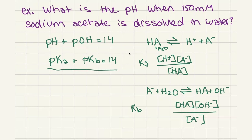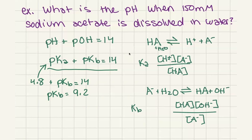Now we can solve for pKb. We know that the pKa of the conjugate acid is 4.8, so: 4.8 plus pKb equals 14, which gives us pKb equals 9.2. Now we can set up the same ICE-table-style reaction as before.